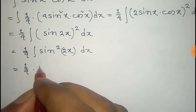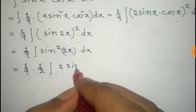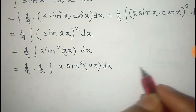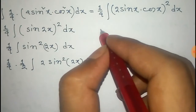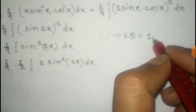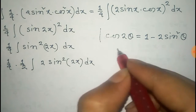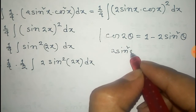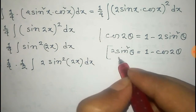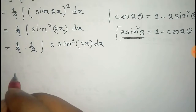Now we write this as one-fourth into one-half integral of 2sin²(2x) dx. We know that cos(2θ) = 1 − 2sin²θ, and from this, 2sin²θ = 1 − cos(2θ).